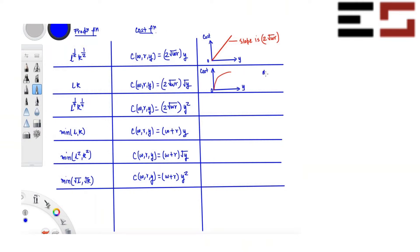Let's take the derivative of this: DC/DY equals √(WR) / √Y. Notice that this is positive, so the function is upward sloping. But Y is in the denominator, so the slope is falling — as Y increases, the slope is falling. We can see that's true about this graph: the curve gets flatter and flatter as you increase Y.